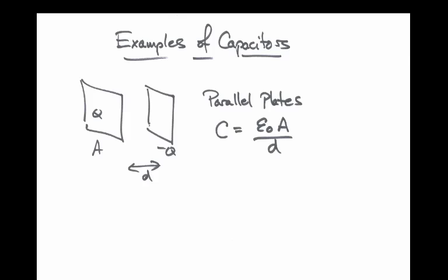For two infinitely large sheets, or approximately infinitely large sheets, each of area A and separated by a distance d, the capacitance is equal to epsilon naught times the area divided by the distance. In other words, the larger the surface area of the plates, the larger the capacitance, and the larger the distance between the plates, the smaller the capacitance.